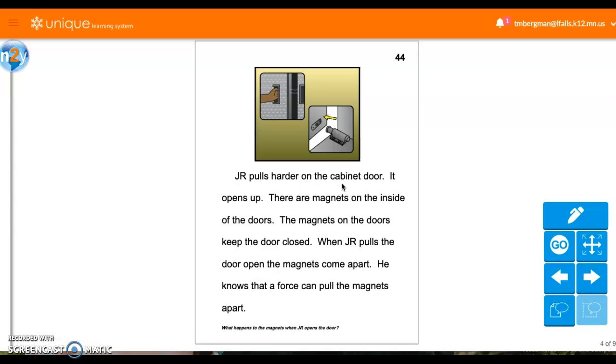J.R. pulls harder on the cabinet door. It opens up. There are magnets on the inside of the doors. The magnets on the doors keep the door closed. When J.R. pulls the door open, the magnets come apart. He knows that the force can pull the magnets apart. What happens to the magnet when he opens the door? Yeah, the magnets keep it closed. So what does he have to use to pull it harder? More force.